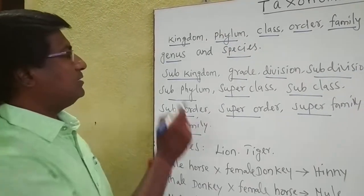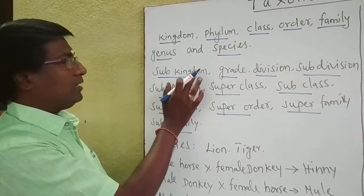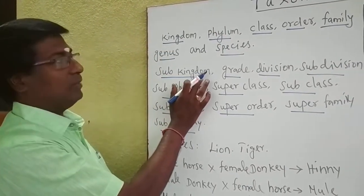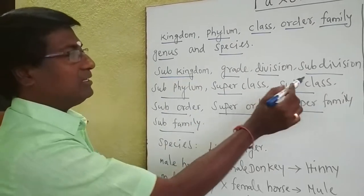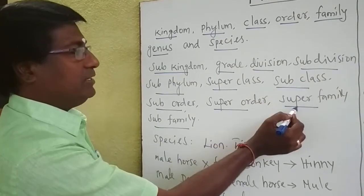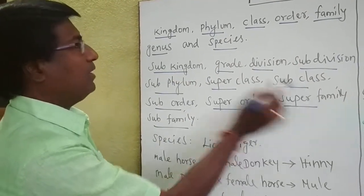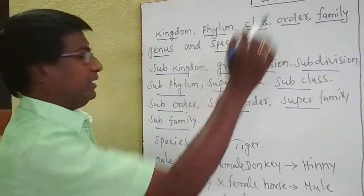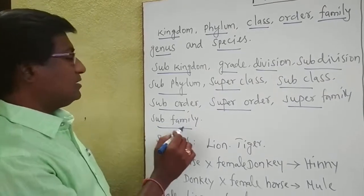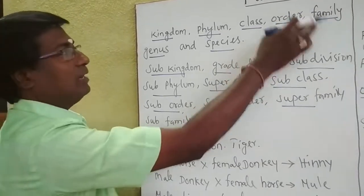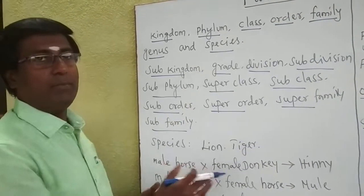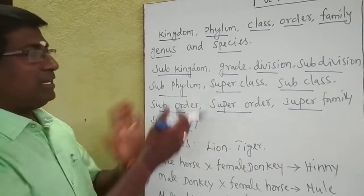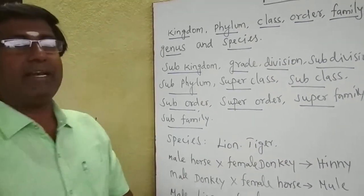For example, subkingdom comes after the kingdom. We see the superfamily — it comes above the family. And subfamily comes below the family. So these are the intermediate categories.